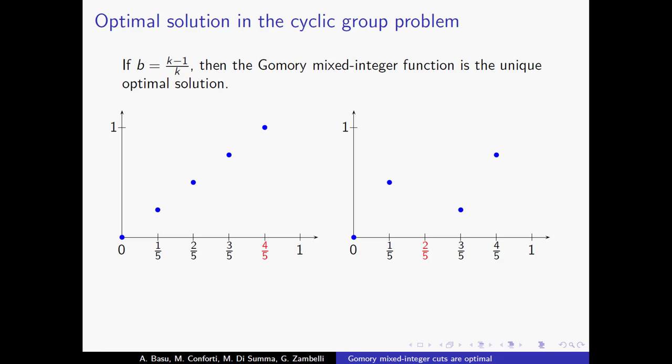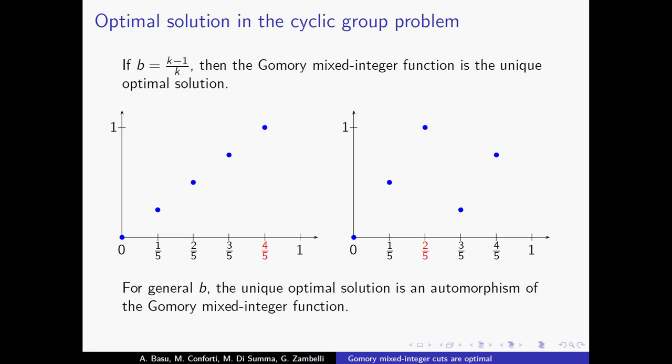In other words, if b is not this special number, the unique optimal solution is not the Gomory function itself, but it is an automorphism of another Gomory function, which is a little surprising, because the Gomory function for this example is the unshifted one — yet the maximizer is the automorphically shifted version.